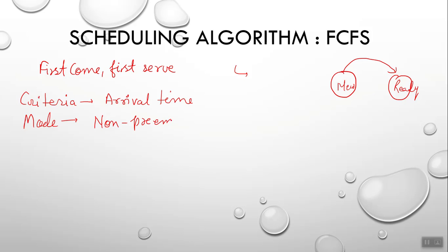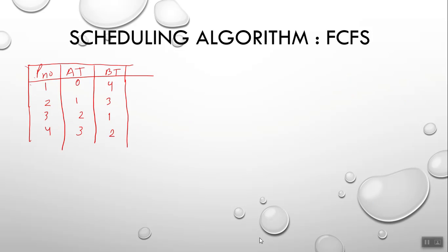There are two modes available: preemption mode and non-preemption mode. Non-preemption mode means that once any process starts executing, it will execute completely. In preemption mode, there may be context switching and lots of switches, which is why that kind of mode is known as preemption mode.